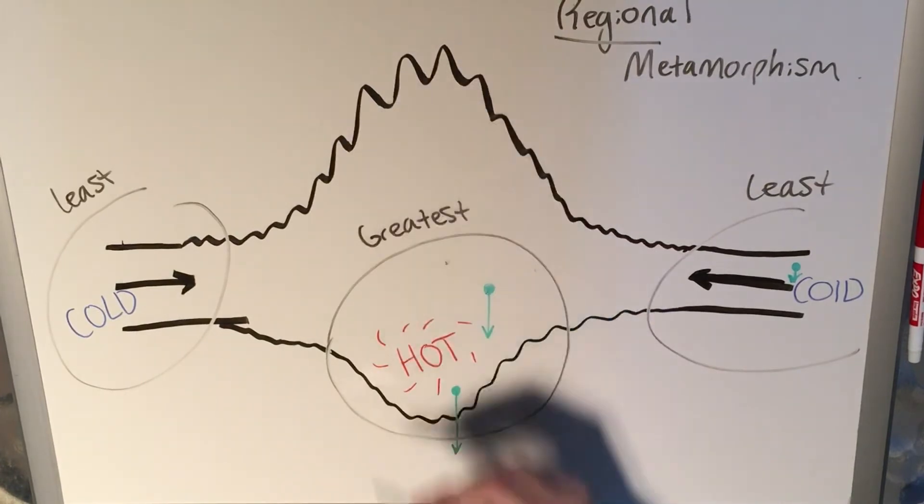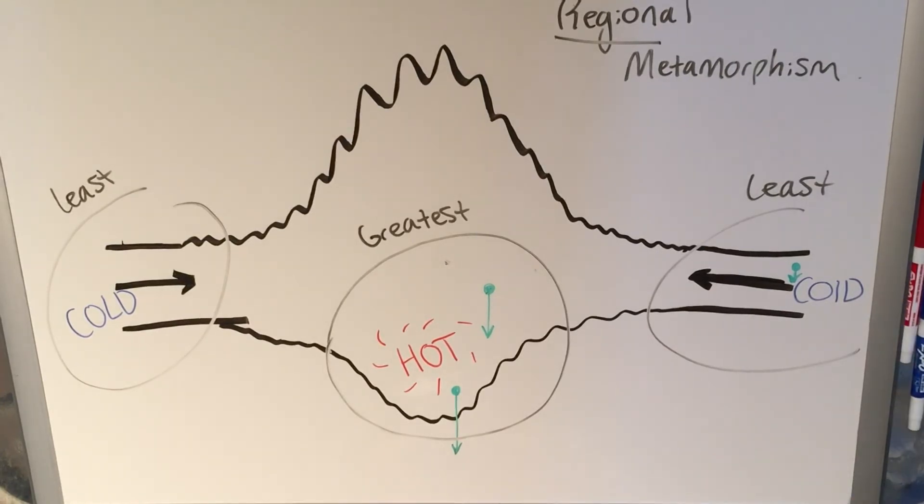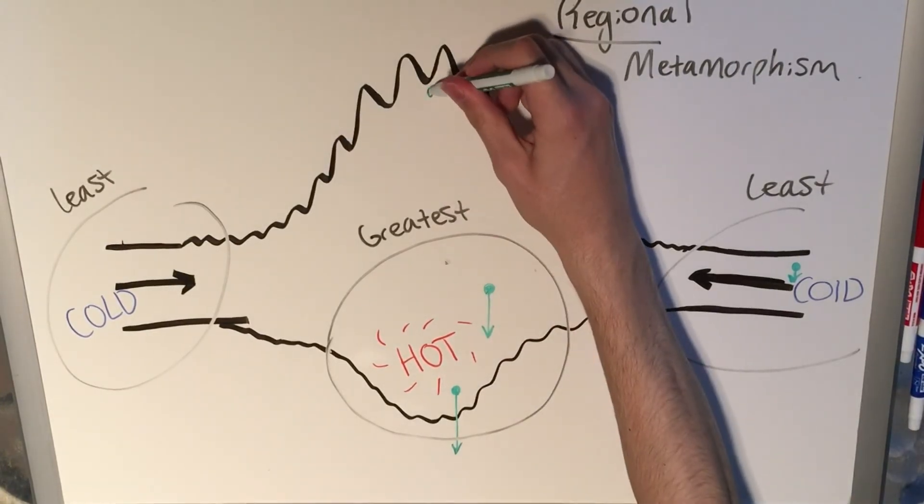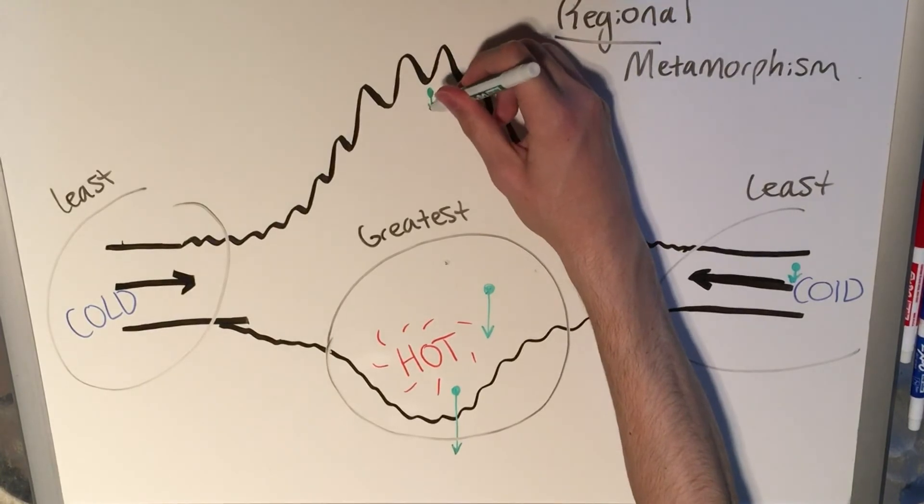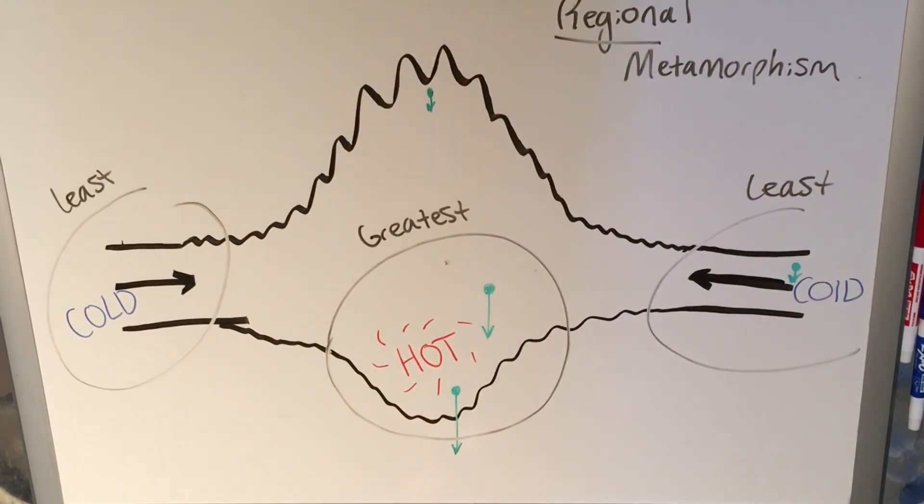But what about at the top here? Well, obviously at the top, the temperature is definitely not going to be that great. But one thing is for certain, and that's that while there's not a lot of confining pressure—because at the very tip of the mountain, there's very little on top—there's going to be very little confining pressure represented by that tiny arrow.